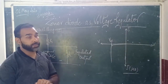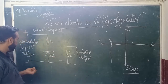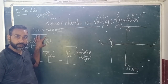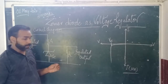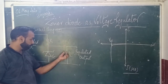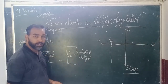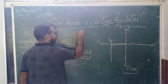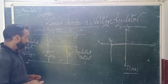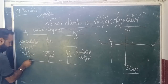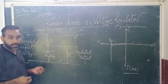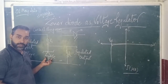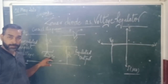This question has a remarkable probability of coming in the examination. In the circuit diagram, an unregulated input voltage is given through a series resistance RS. The zener diode is connected and the output is taken across it. The output is taken through the zener diode and a regulated output can be obtained. The p-side of the zener diode is connected to the negative terminal of the input voltage and the n-side to the positive terminal — so the zener diode is always connected in reverse bias.